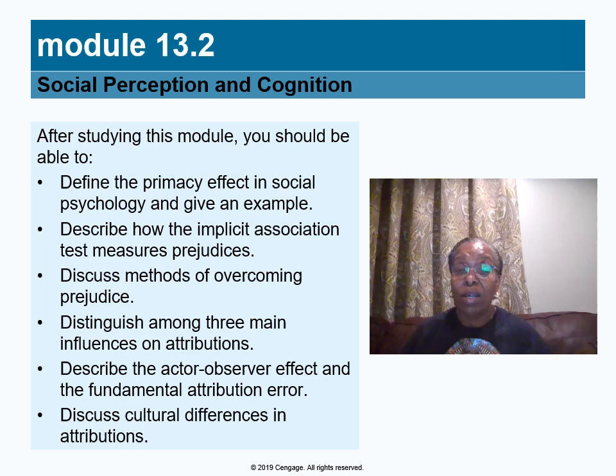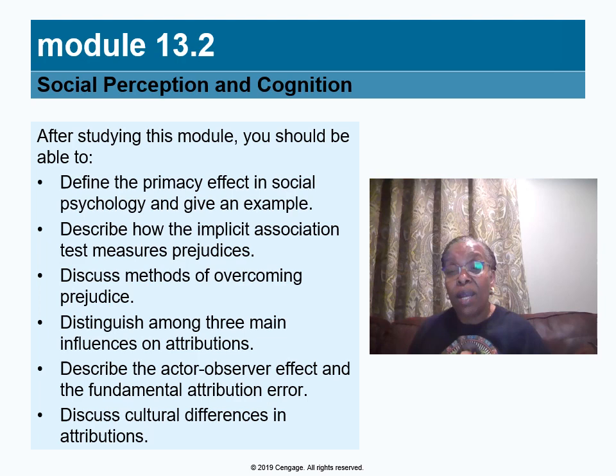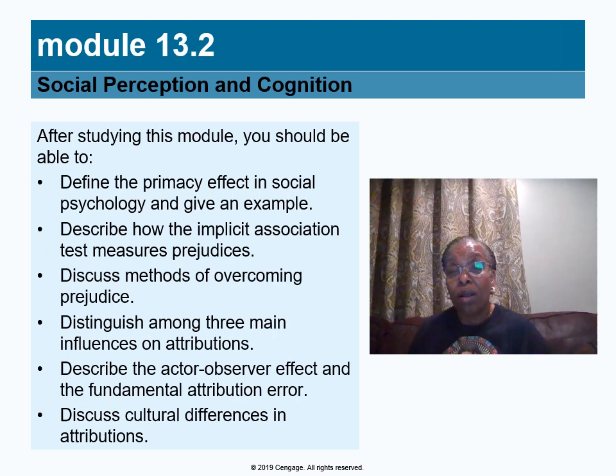Let's stop and look at Module 13.2: Social Perception and Cognition. In this module, we will learn about the primacy effect, the implicit association test and how we use it to measure prejudice, different ways we can overcome prejudice, the three main influences on attributions, the actor-observer effect, the fundamental attribution error, and cultural differences in attributions.